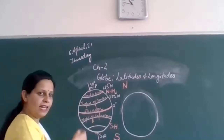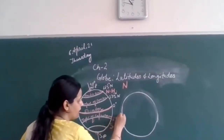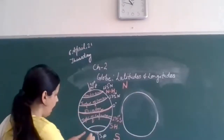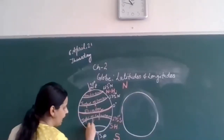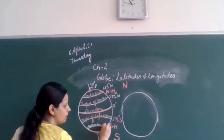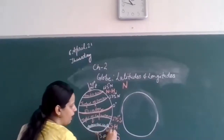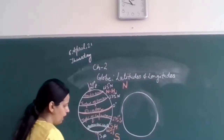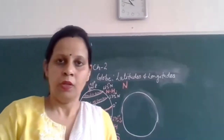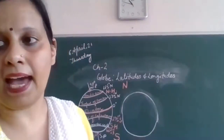In the Southern Hemisphere, the Tropic of Capricorn lies at 23 and a half degrees south. Then there is the Antarctic Circle at 66 and a half degrees south, and then the South Pole at 90 degrees south.